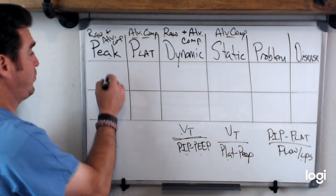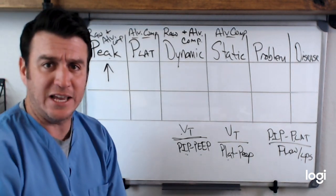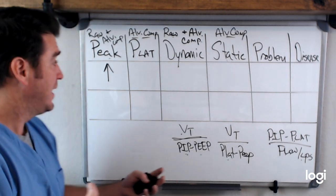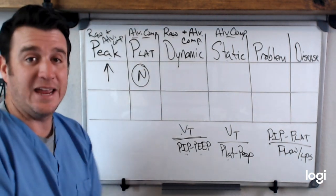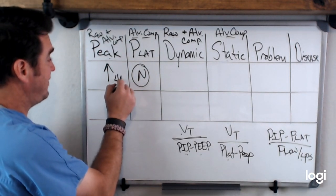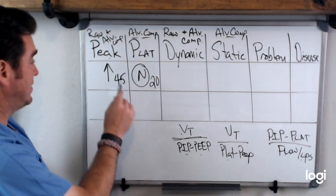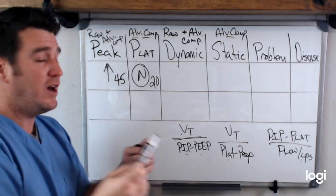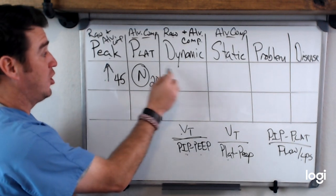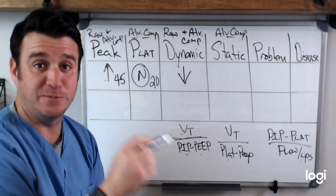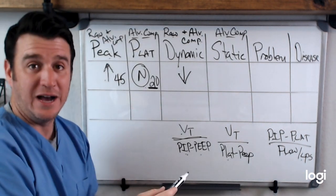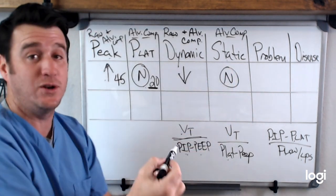First scenario: if your peak inspiratory pressure elevates — say, throughout your shift you notice it going up — but you notice that your plateau is staying the same, let's say we had a peak going up to 45 and a plateau remaining at 20. Our peak is up, our plateau is normal. I don't even have to do the math — I understand that my peak going up is going to cause my dynamic compliance to go down. But because my plateau pressure is staying normal, my static compliance is not going to be changed; it will remain normal.